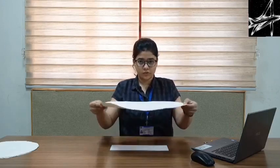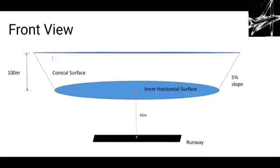The next surface is the conical surface. It is an imaginary surface which extends upward and outward from the periphery of the inner horizontal surface on all sides. The conical surface has a slope of 5% outward in the case of code 3 and 4 runways, and is raised to a height of 100 meters from the inner horizontal surface. So ultimately it reaches a height of 145 meters from the elevation datum.